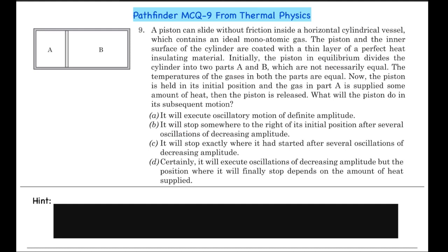A piston can slide without friction inside a horizontal cylindrical vessel which contains an ideal monoatomic gas. The piston and the inner surface of the cylinder are coated with a thin layer of perfect heat insulating material. Initially the piston is in equilibrium, divides the cylinder into two parts A and B which are not necessarily equal. The temperatures of the gases in both the parts are equal.